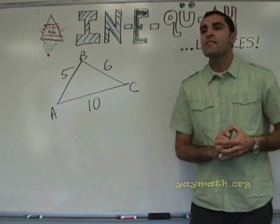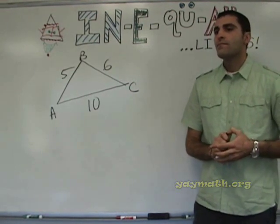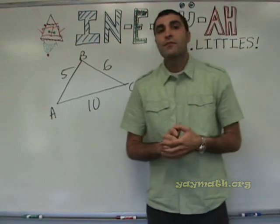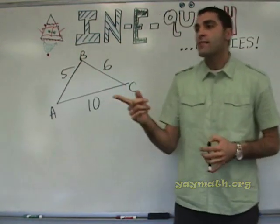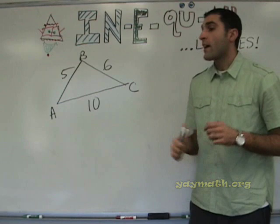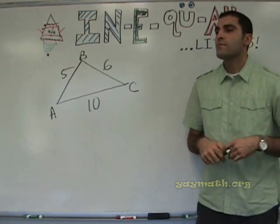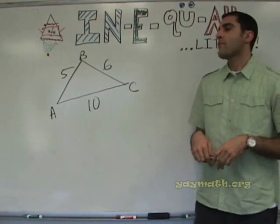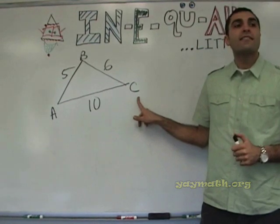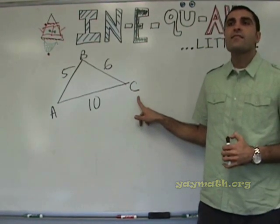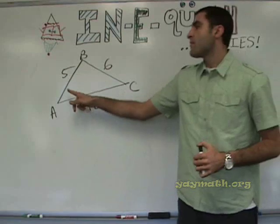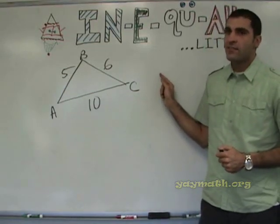Thus, what is the smallest angle? Can anyone guess what's the smallest angle? Angle C. Why is C the smallest angle? Because it's opposite from the shortest side. Right on. Opposite the smallest side is the smallest angle.